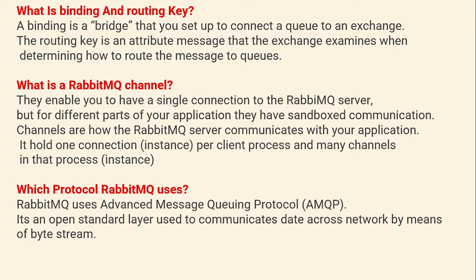What is binding and routing key? The binding is a bridge that you set up to connect a queue to an exchange, and the routing key is an attribute of the message that the exchange examines while determining how to route the message to queues.